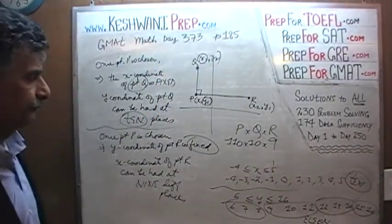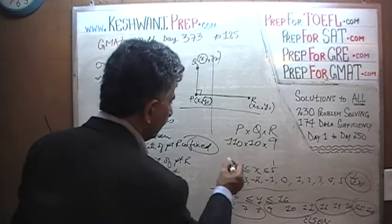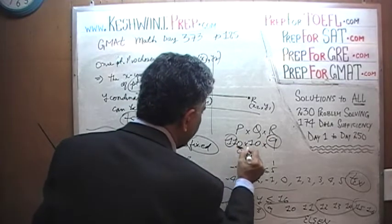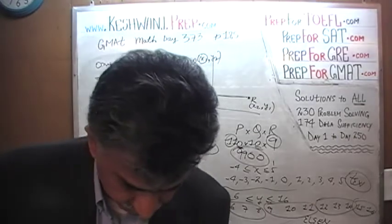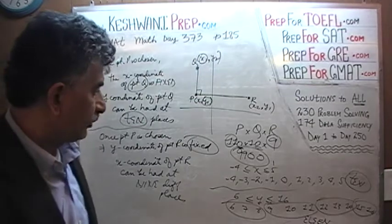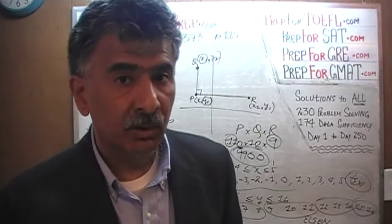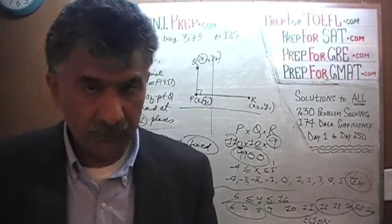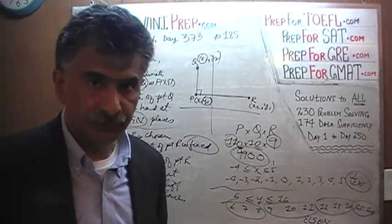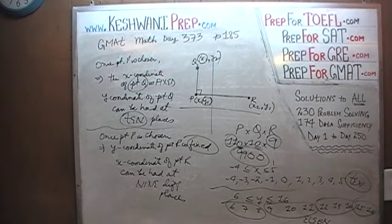That's it — we are done. Let's finish it up. We have 110 possibilities for point P, 10 for point Q, and 9 for point R. That gives us 110 times 10 times 9: 11 times 9 is 99, and with the two zeros that's 9,900. The answer is 9,900, which is answer choice C. If you had trouble with this explanation or feel I went too fast, I assure you that in yesterday's video we took our time. Watch day 372 if you were lost here. I'll see you tomorrow. Bye now.